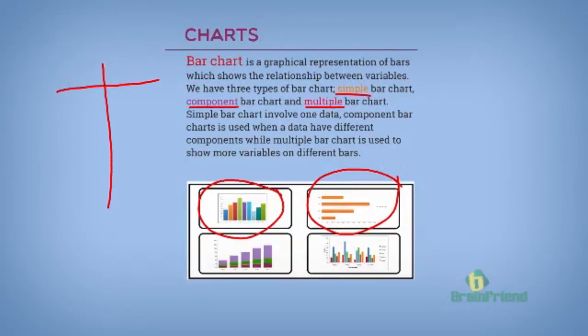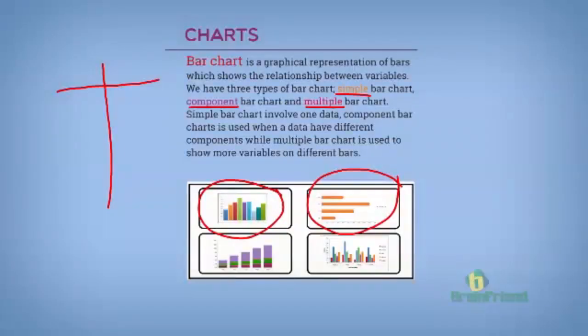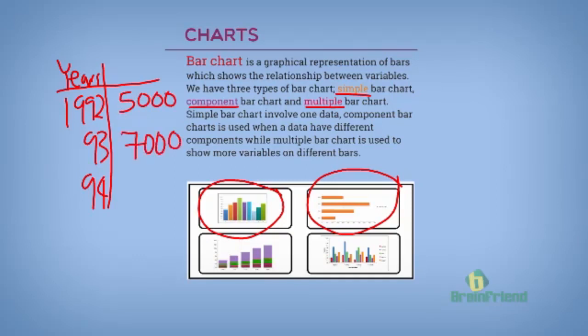For example, let's look at the quantity of apples produced in three years. So if you say 1992, 93 and 94. And we have 5,000 quantity in this year, 7,000 in this year, and 9,000.